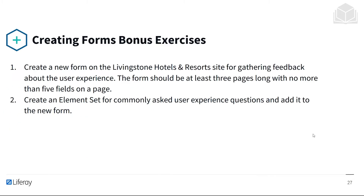After this exercise, there will be some bonus exercises that I won't be going through, but that you can try for yourself. This includes creating a new form on the Livingston Hotels and Resorts site for gathering feedback about the user experience. The form should be at least three pages long, with no more than five fields on a page. You can also try creating an element set for commonly asked user experience questions and add it to the new form. But with that, let's start with the exercise.